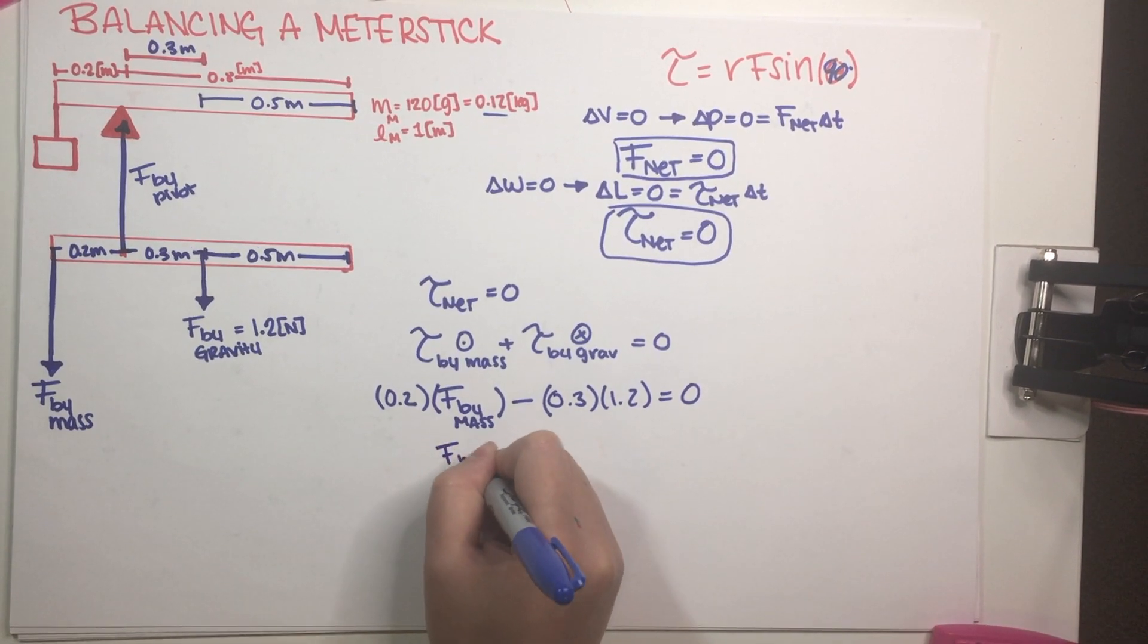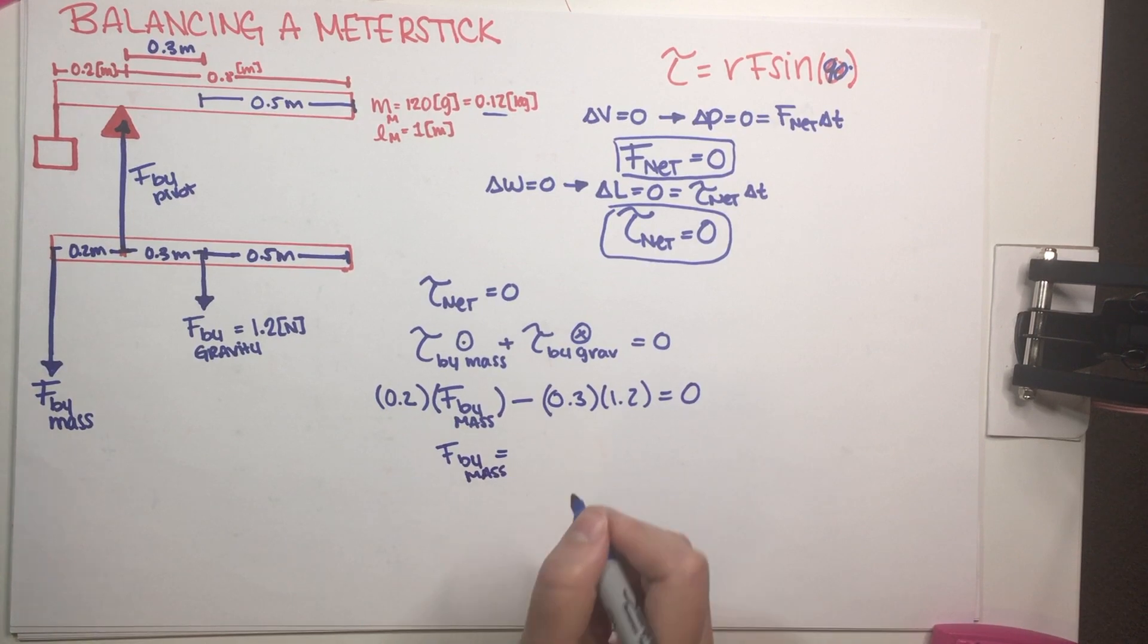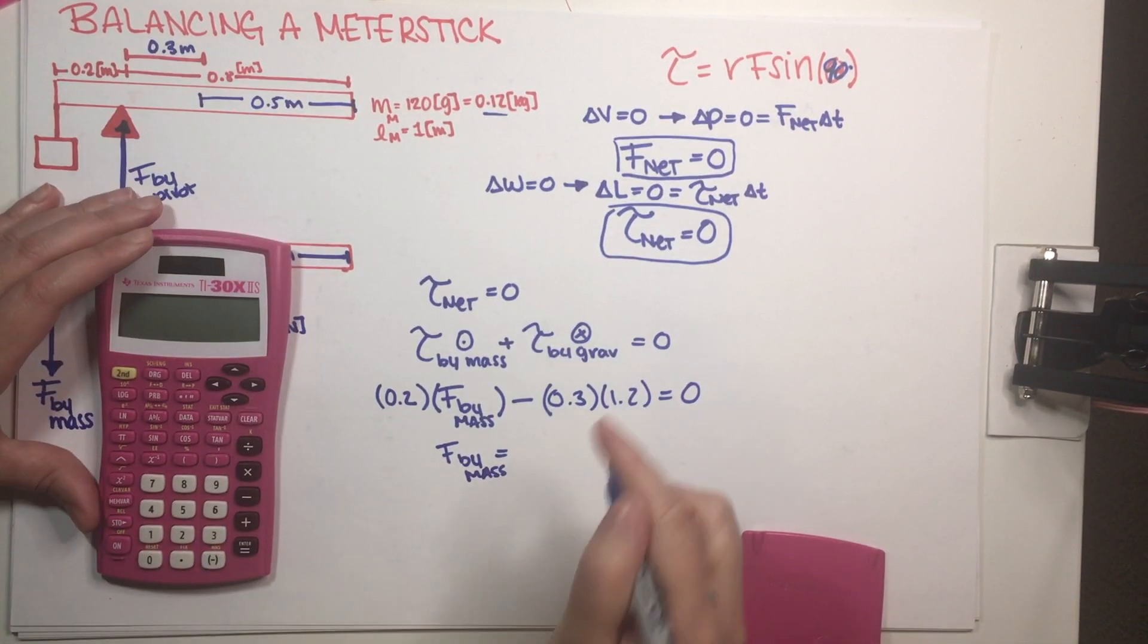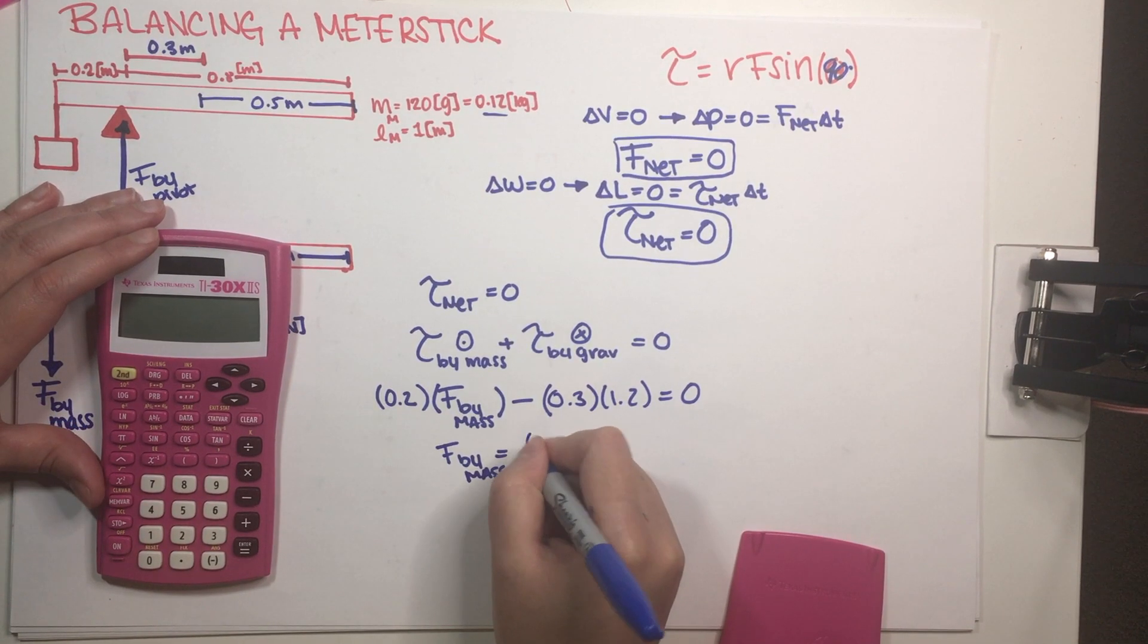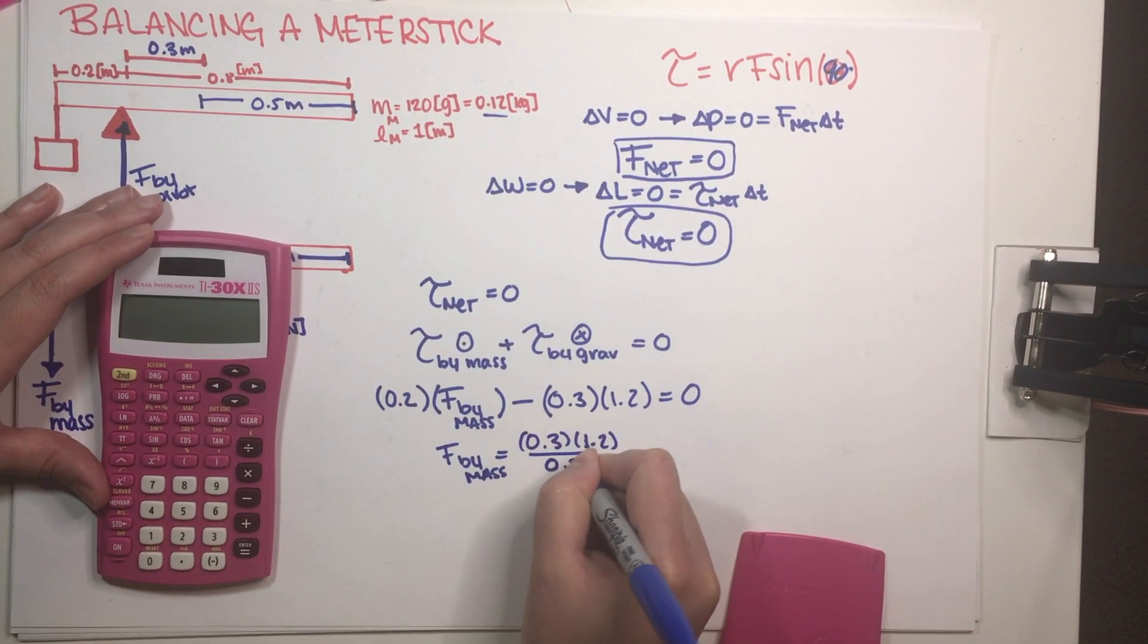Force by gravity, we already know that that is just 1.2, and this has to be equal to 0. So force by mass, this is equal to, let's see, so this is going to be equal to 0.3 times 1.2 divided by 0.2.